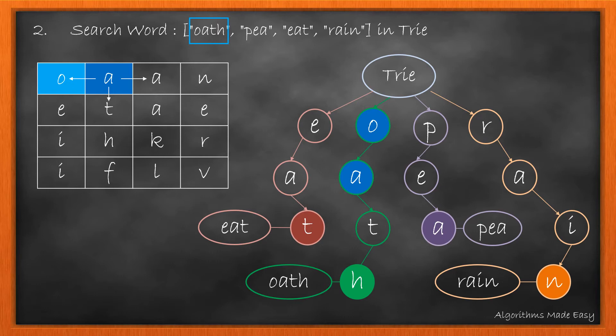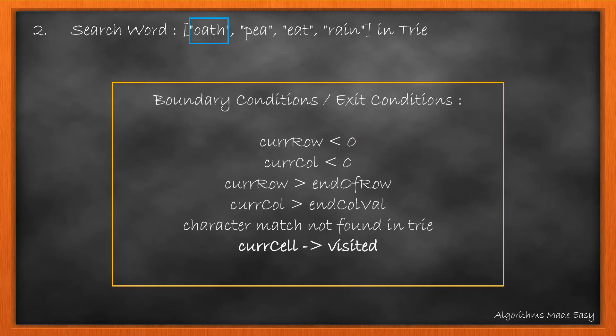But let's wait here for a moment. As per the question, the same letter cell must not be used more than once in a word. So we cannot visit the element we came from again while moving forward. This adds one more exit condition: the cell must be unvisited.